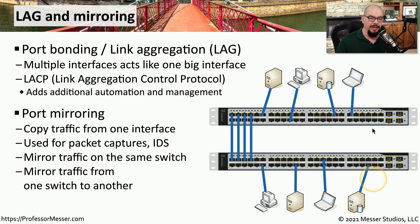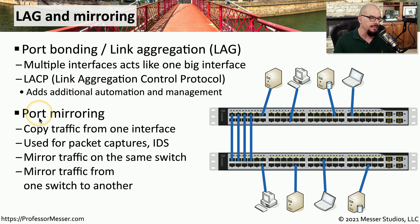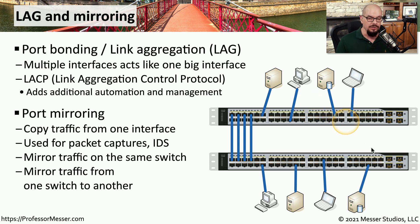If you're troubleshooting communication on the switch, you may find it difficult to see the packets that are traversing two individual devices. If you need to capture some of that information, you may want to configure one of these interfaces as a port mirror. A port mirror will copy traffic from one or more interfaces on the switch to a separate interface that you can plug into and perform packet captures. Some switches also support the ability to put the protocol analyzer on a different switch and mirror traffic from one switch to the protocol analyzer on another physical switch.